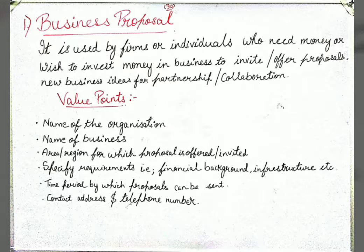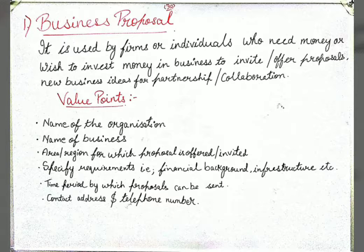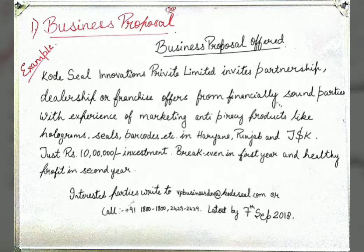You also have to mention the infrastructure of your company, the time period by which proposals can be sent — a particular date by which investors or companies should respond — and your contact address and telephone number at the end of the advertisement, which is compulsory. This is the example of a Business Proposal advertisement — stop the video and read it. If you still have any problem, please tell me in the comments.